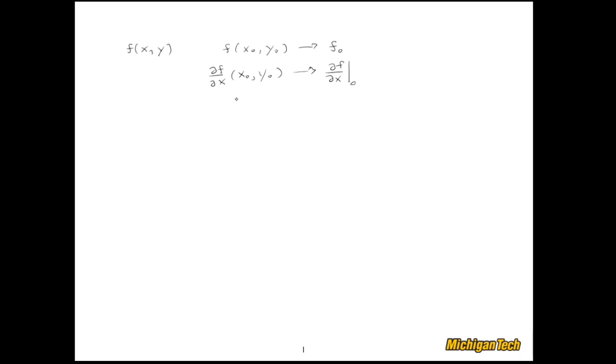And finally, if I had the partial of f with respect to y evaluated at x0, y0, I'll denote that as the partial of f with respect to y evaluated at 0. So this is not saying I'm evaluating at zero, but I'm evaluating at x0, y0. It's a little bit sloppy, a little bit lazy, but it'll allow us to get through this a wee bit faster.